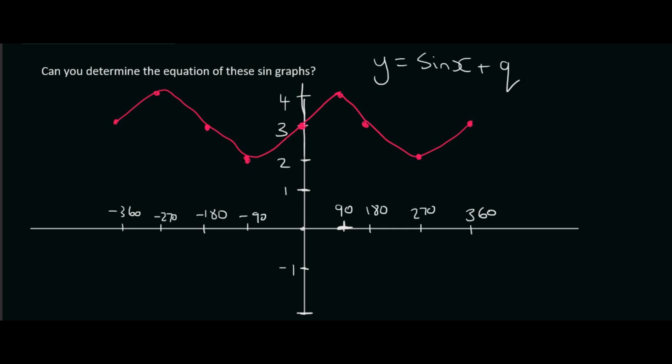Here is another example that we can try. So what I always like to do, they've told us that it's a sin graph that has been either moved upwards or downwards. We can clearly see that this graph has been moved upwards. So we look at a normal sin graph, and now a normal sin graph always goes between 1 and minus 1. This one has a highest value of 4, and its lowest value is 2, whereas normally it's minus 1 and 1.